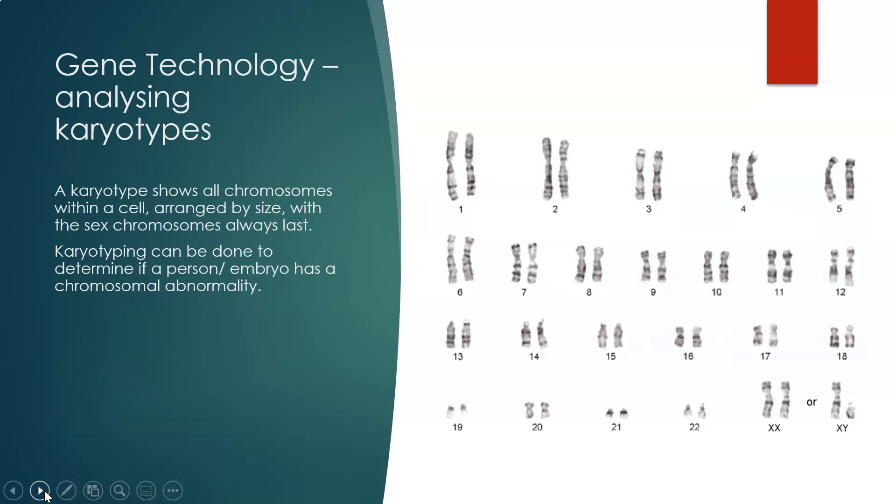Karyotyping can be done to determine if a person or embryo has a certain chromosomal abnormality. A normal karyotype shows 22 homologous pairs and two sex chromosomes. If something is different to this, it's classed as an abnormal karyotype.